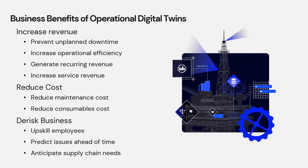For example, if you are able to predict your needs for consumables and assets, then you could also anticipate your supply chain needs for the coming quarters or years. So there are many benefits that you get from operational digital twin solutions when you deploy them for your assets and operational processes.